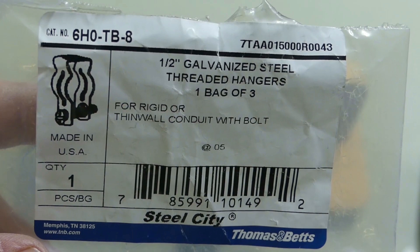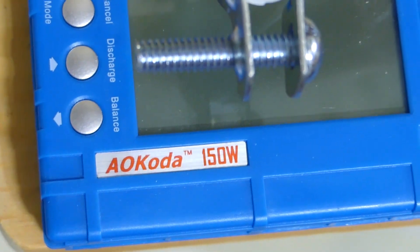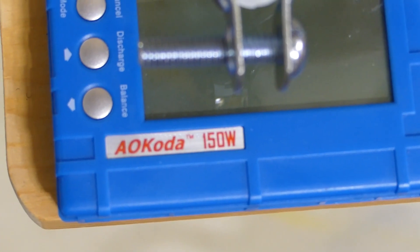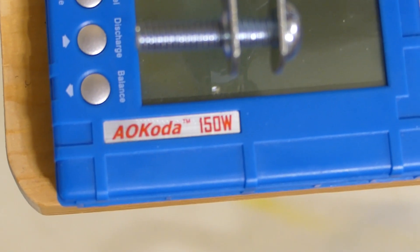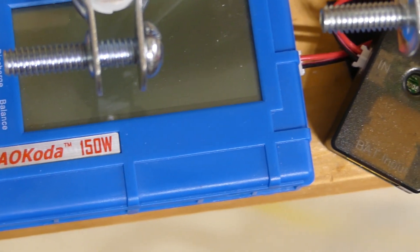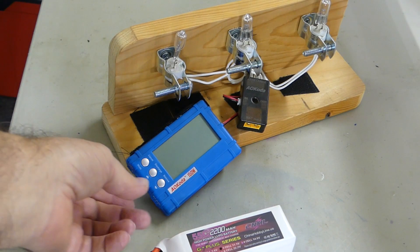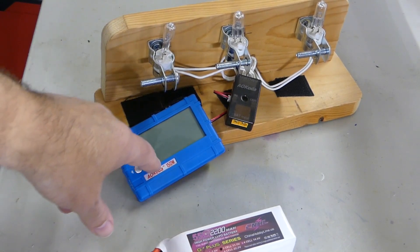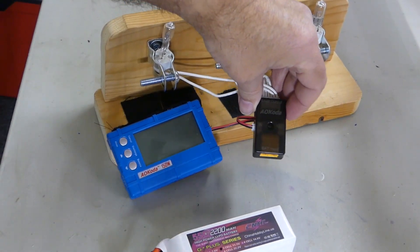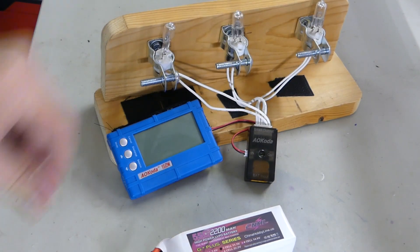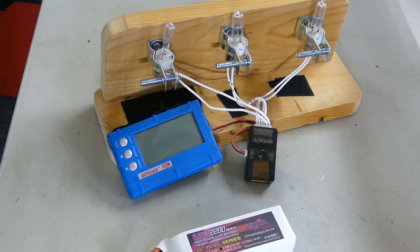So the device itself, the AOKODA, let's see if we can get this in view here on the camera. AOKODA 150W, so I presume that means it's good for 150 watts. In the package it will come with your base module here, it will also come with your control board enclosed in a case, then it comes with three bulbs and the sockets for the three light bulbs.